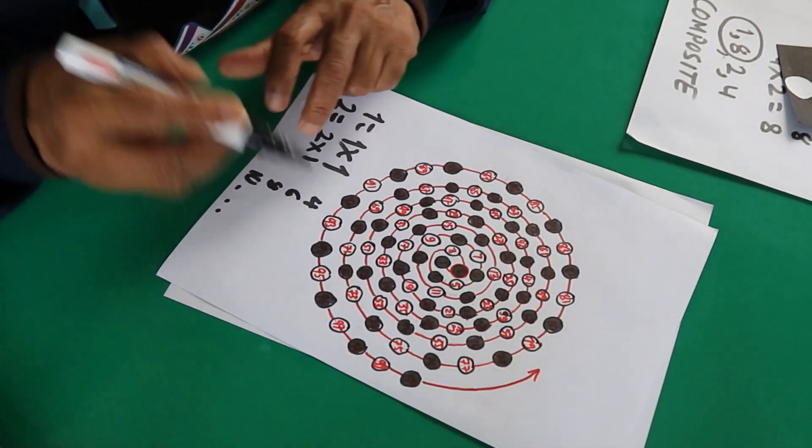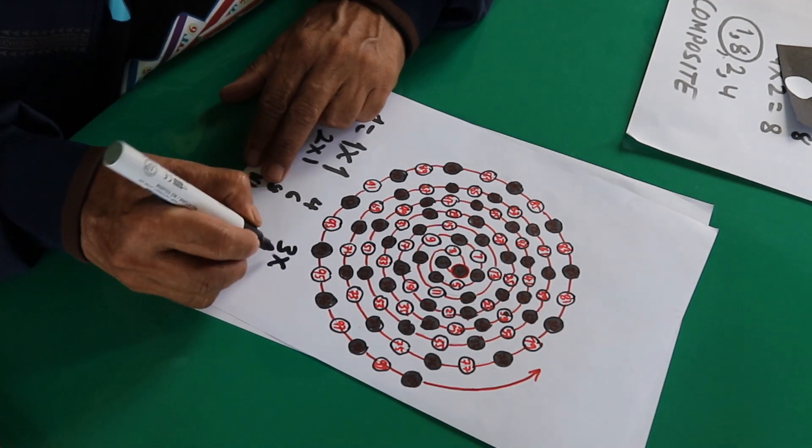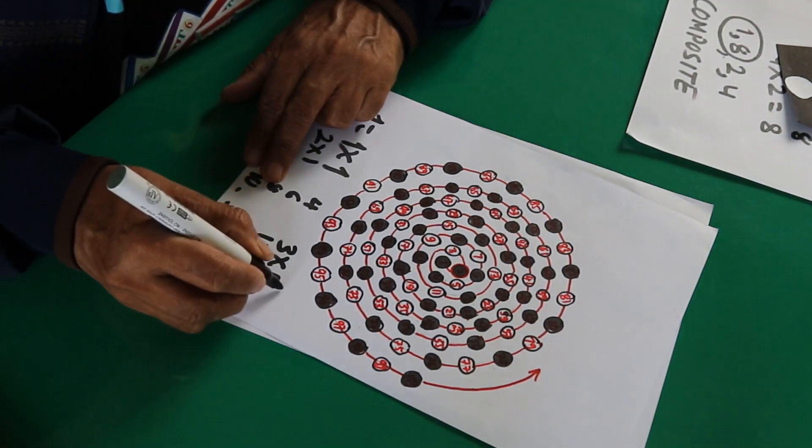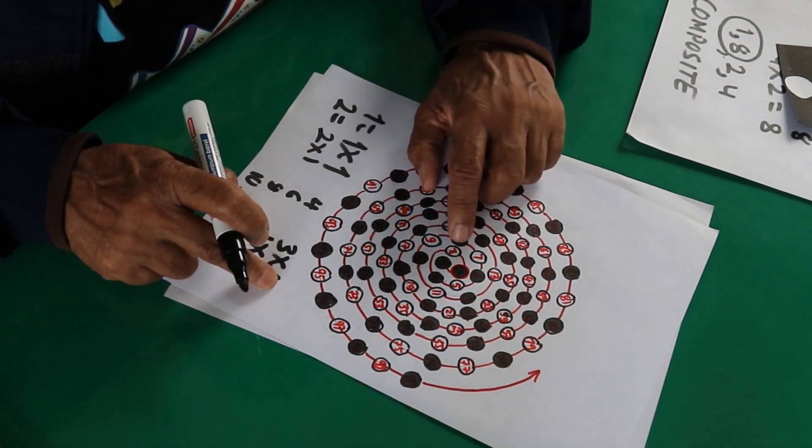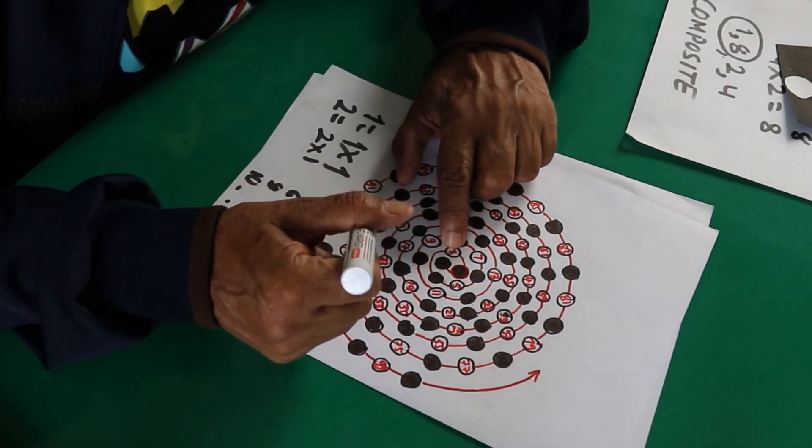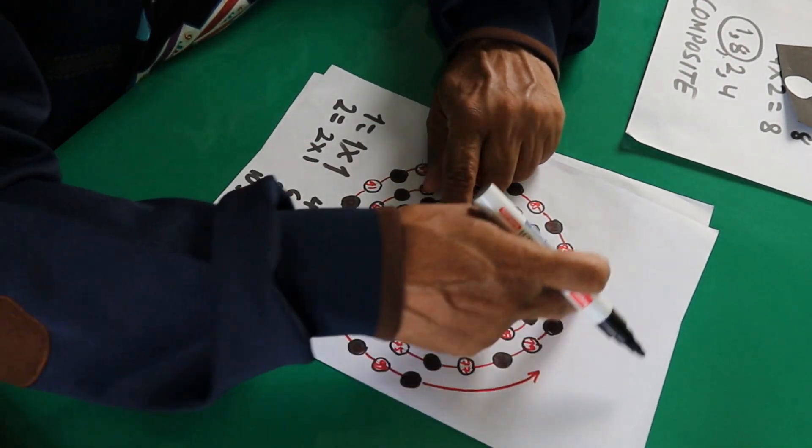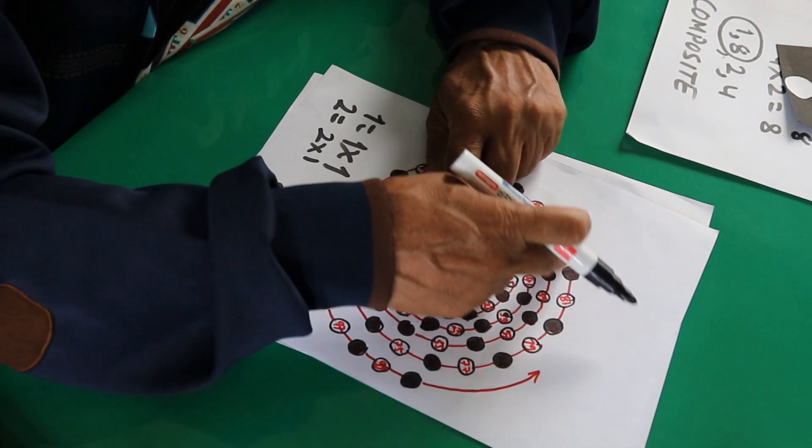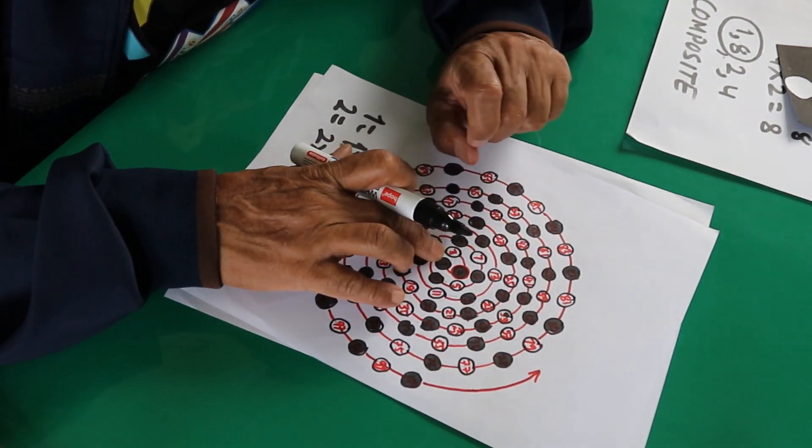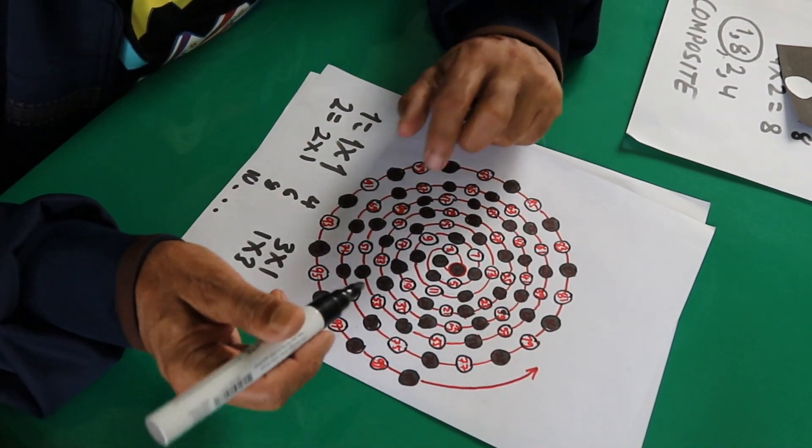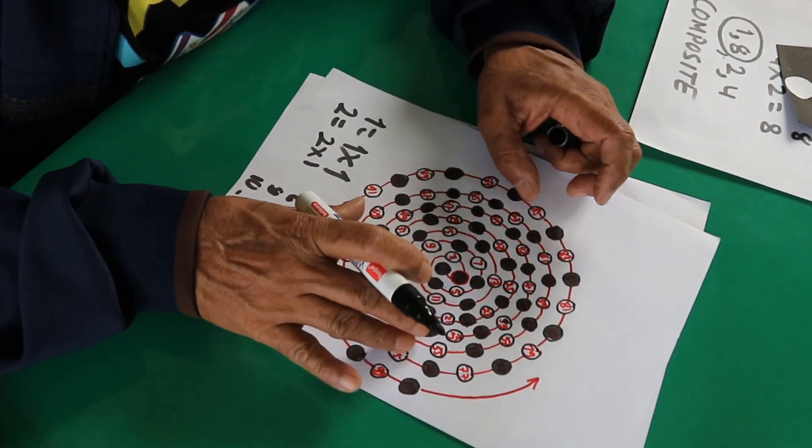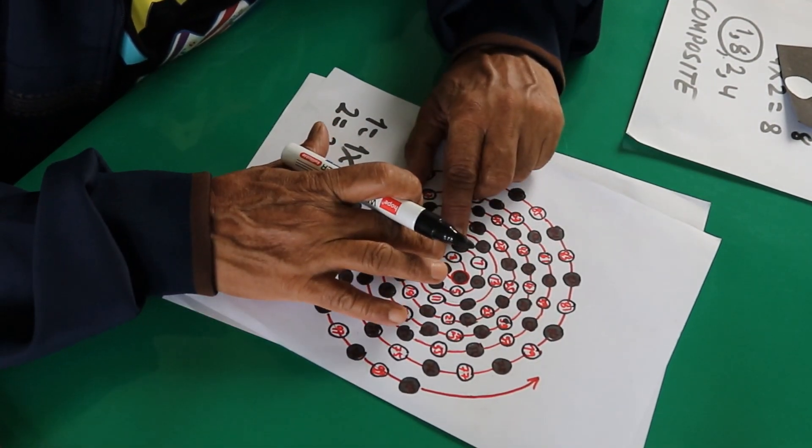And now let's set this number two. Actually this number two is to be circled with red. This is red, here is the number two, you have to understand that one. And here, there is the number three. Three has the factors three ones are three, one three is three. Only two factors, one and three. That's why it is also a prime number. And now, out of the remaining numbers, the numbers that are left over, let us set those numbers which are perfectly divisible by three.